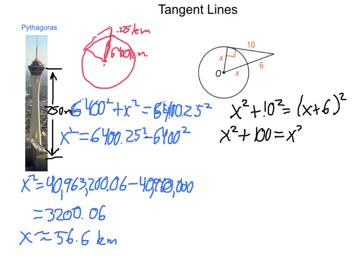Now simplifying this out, we have x squared plus 100 equals a binomial, x plus 6. When we square it, it comes out with x squared plus 12x plus 36. Now subtraction property of equality, I can subtract x squared from both sides, leaving me with 100 equals 12x plus 36.